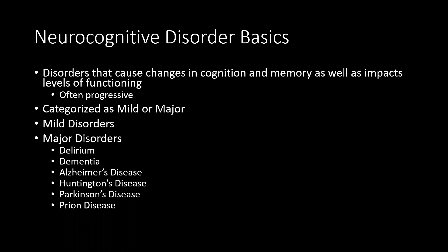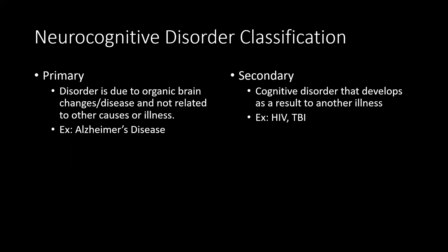They are often progressive and can be categorized as mild or major. Examples of major neurocognitive disorders include delirium, dementia, Alzheimer's disease, Huntington's disease, Parkinson's disease, and prion-related disease.